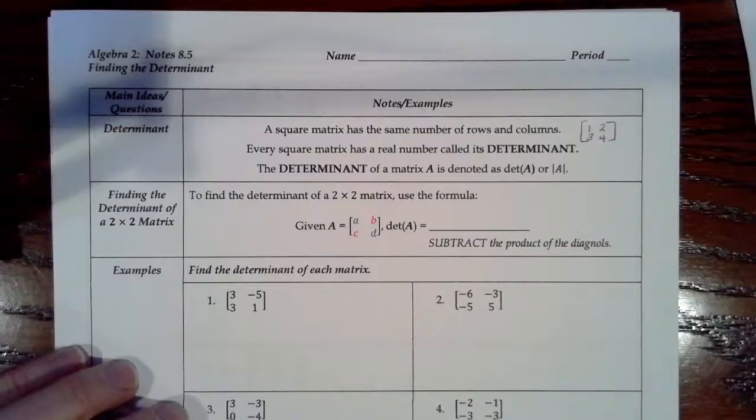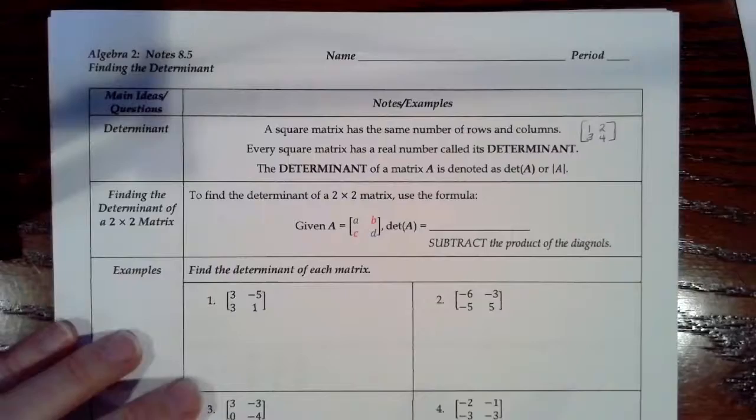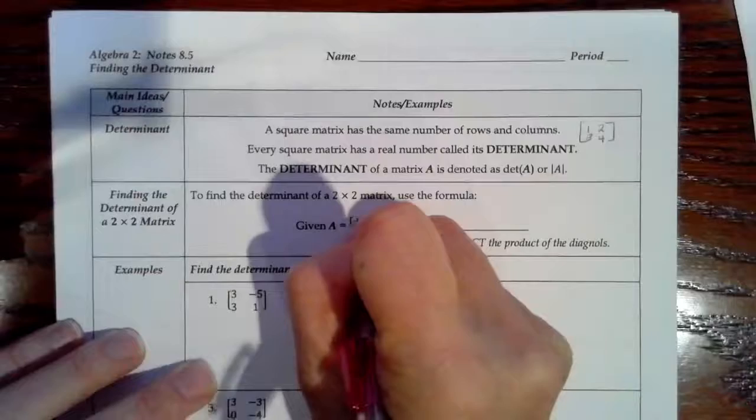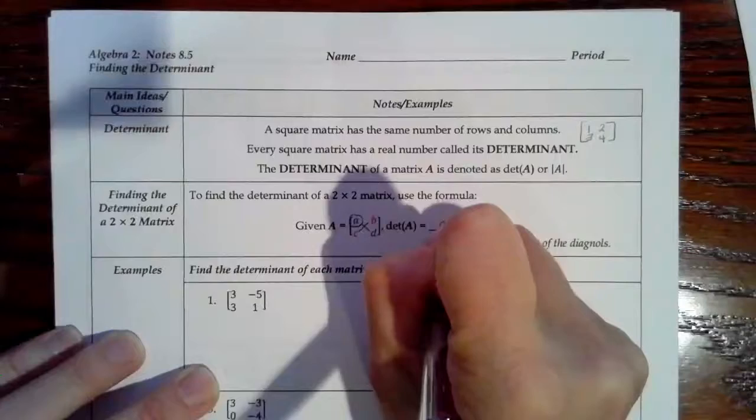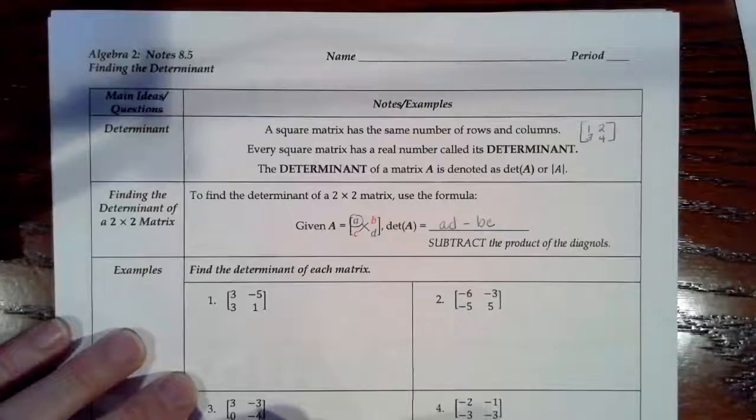When you're finding the determinant, you're going to use a specific formula for a 2 by 2 matrix and a different formula for the 3 by 3 matrix. For the 2 by 2 matrix, you start with the top left and multiply A times D, then subtract B times C. So it's A times D minus B times C. Order of operations means we multiply first and then subtract.